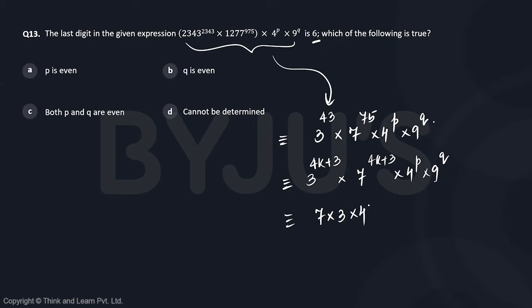So, times 4 to the power p times 9 to the power q. This is a number that ends in 1 times 4 to the power p times 9 to the power q. And as per the question, this should eventually result in a number that ends in 6.